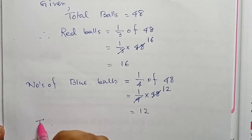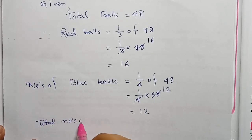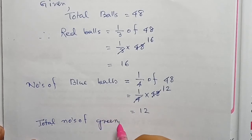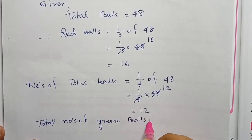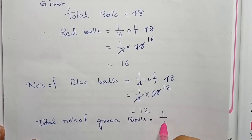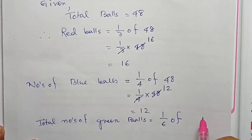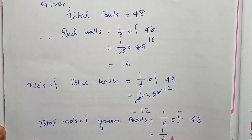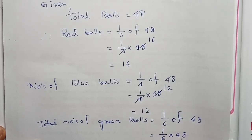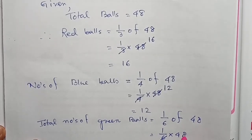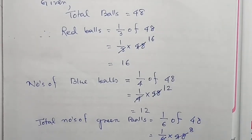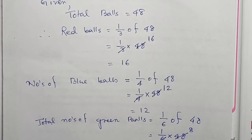Total number of green balls = 1/6 of 48 = 1/6 × 48. Since 6×8=48, the answer is 8. Total number of green balls equals 8.